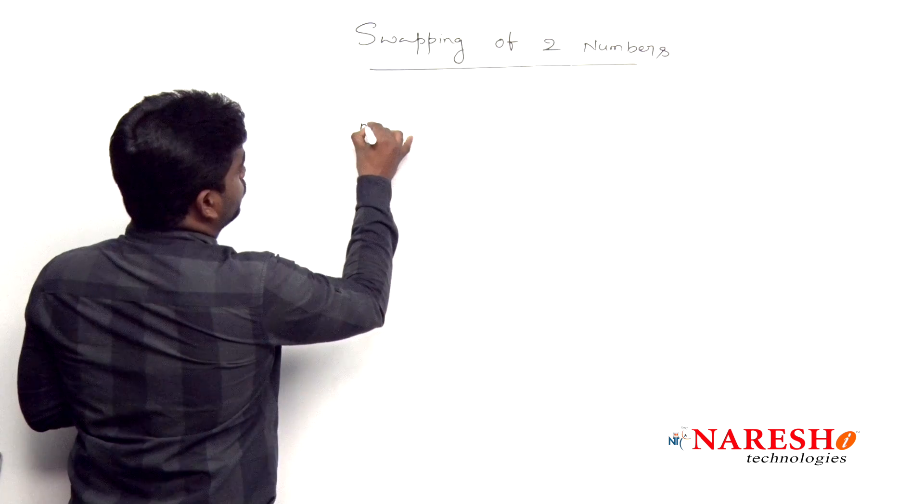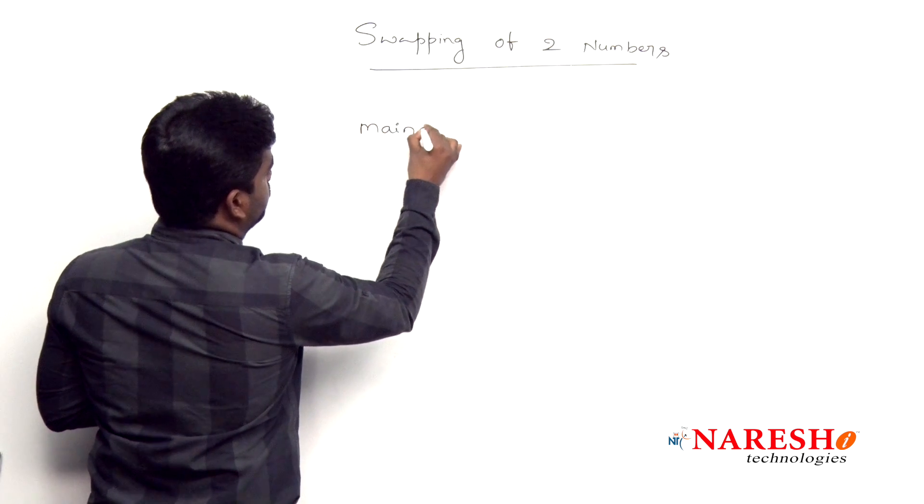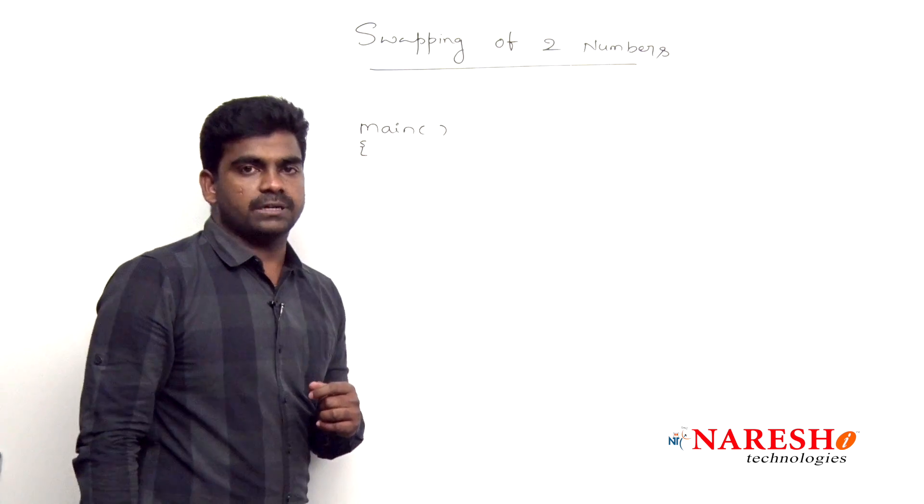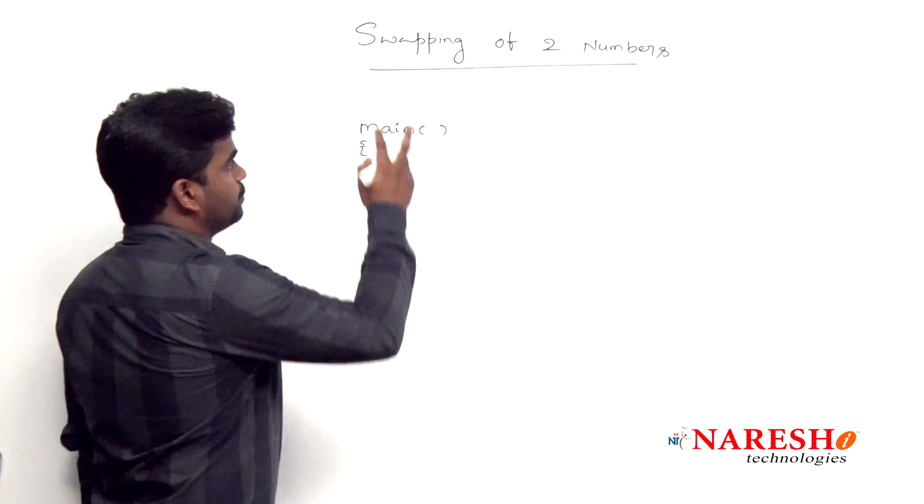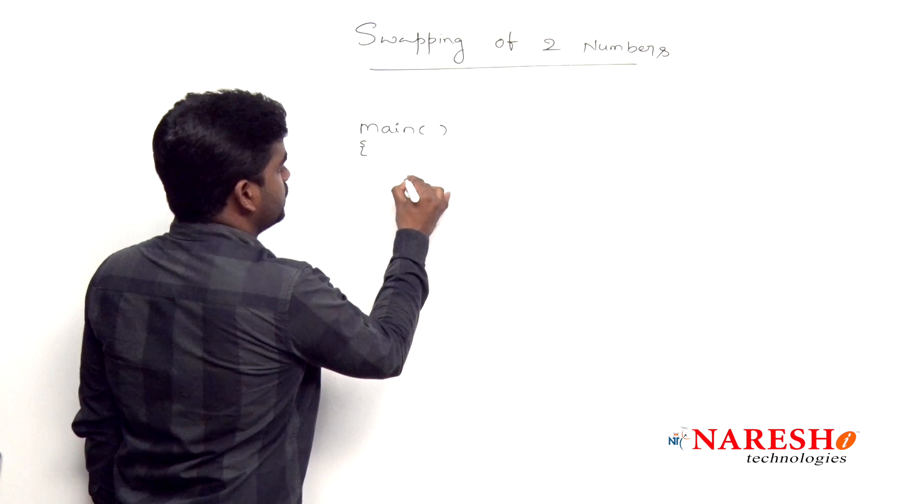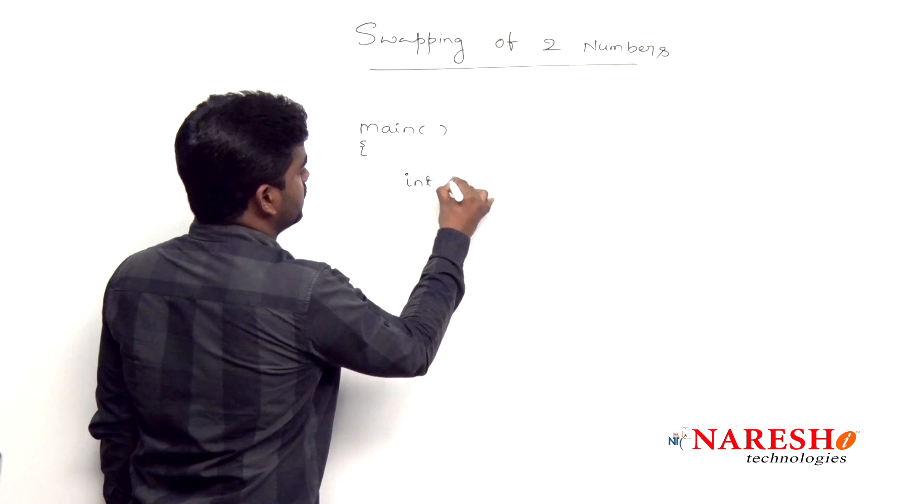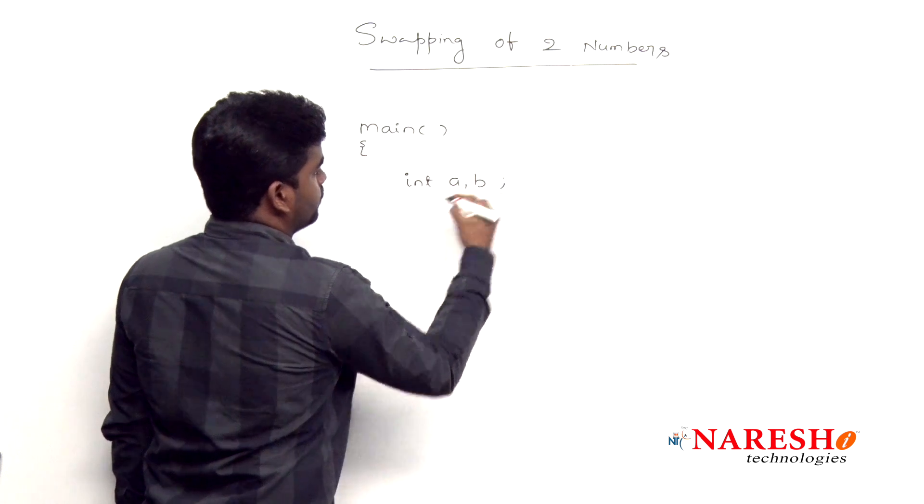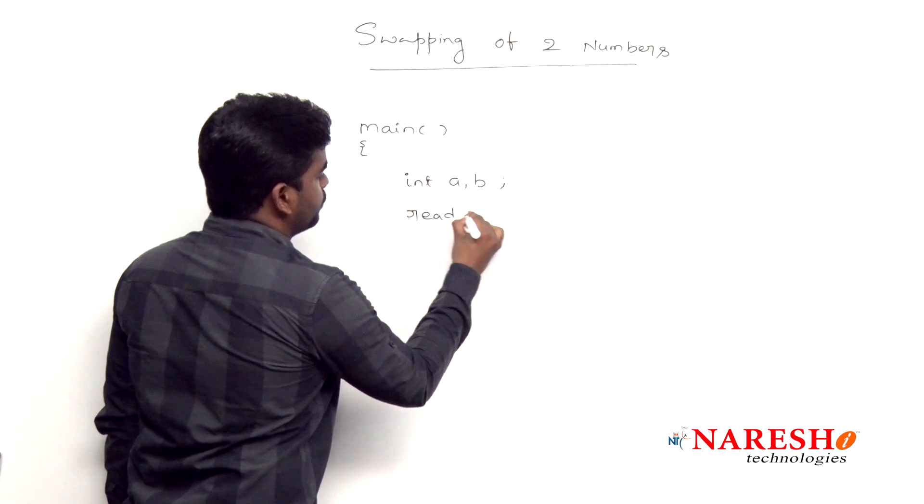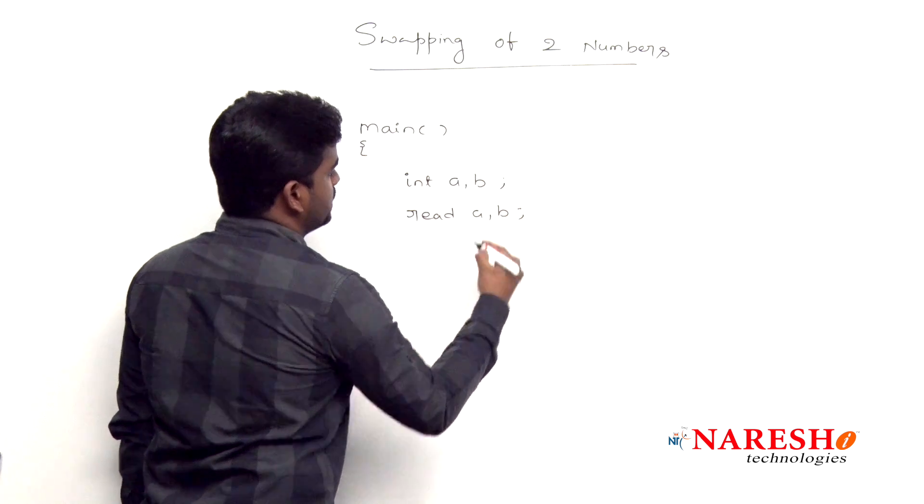First, program execution starts with a main function. In the main function, we are reading two numbers because we're going to swap two numbers. Here, suppose like int a comma b - we declare a comma b, and we read the values of a and b using printf and scanf functions.